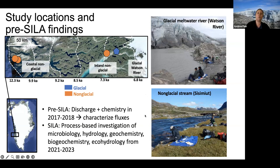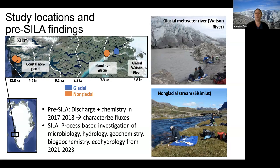Before the SELA project, research focused on characterizing fluxes from land to sea by measuring discharge and chemistry between 2017 and 2018. The SELA project builds on this with a process-based investigation of what controls the composition of this water, incorporating microbiology, hydrology, geochemistry, biogeochemistry, and ecohydrology to understand how landscape development impacts land-to-sea fluxes of water and solutes.